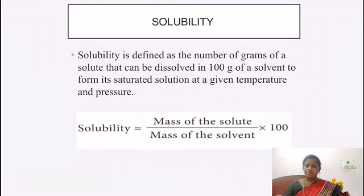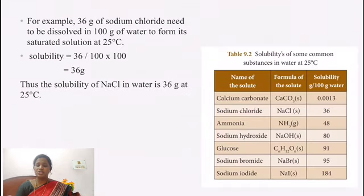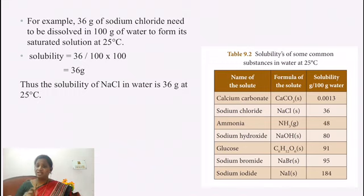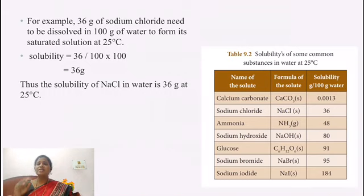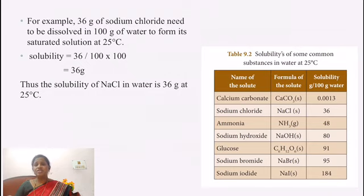For example, 36 grams of sodium chloride dissolved in 100 grams of water at 25°C forms a saturated solution — meaning only 36 grams of NaCl can dissolve in 100 g of water at 25°C. If only 16 grams of solute is present, it is unsaturated. If more than 36 grams are dissolved, it is supersaturated. So the solubility of sodium chloride is 36 grams.